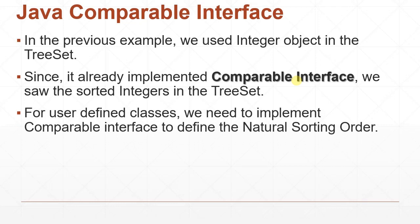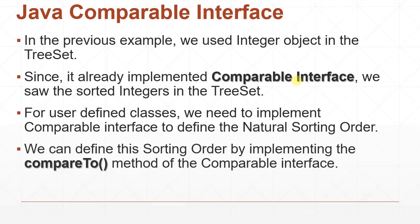For user-defined classes, we need to implement the Comparable interface to define the natural sorting order, because it's a comparison. If we have two Product class objects, or two complex number objects which have a real part and imaginary part, and we want to compare those two objects, we need to define how to compare them. First we need to implement the Comparable interface, then we should implement the method required by that interface.